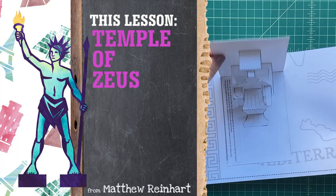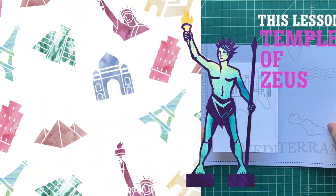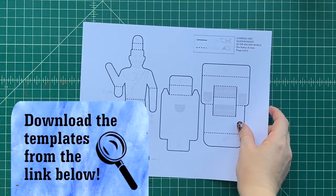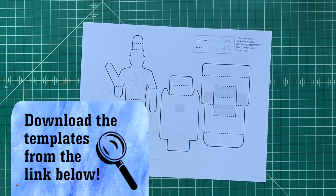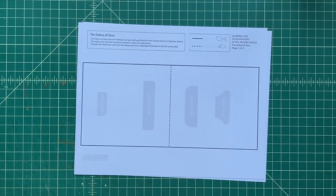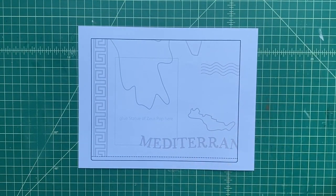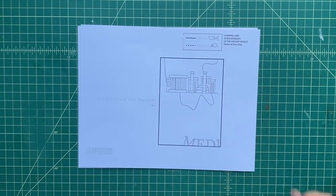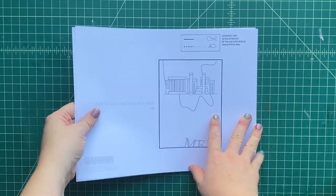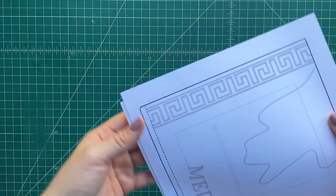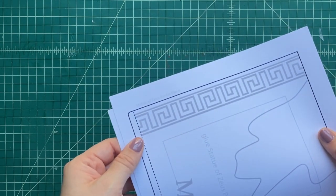All right, you want to get started making this really cool pop? Download the template down below, click that little link down there. You're going to print out the template onto cardstock. Cardstock is a little bit heavier than regular paper, and you can use any color you want. For example, we're just using white cardstock. We're going to print out all the different pages onto that cardstock.